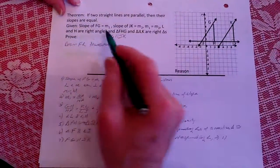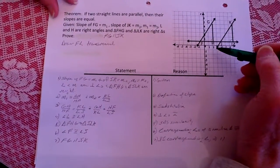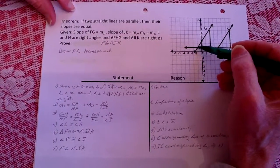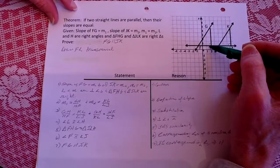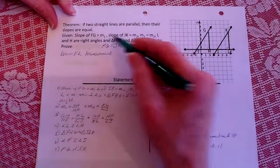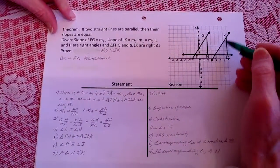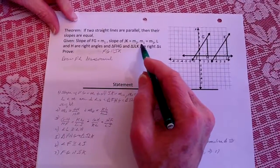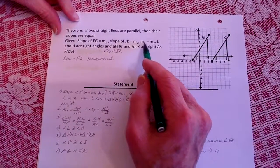And what I have given here is that we have the slope of FG, here's the FG, which is m1, and the slope of JK is m2, and we're saying that these right here are equal.